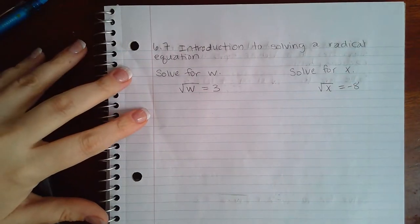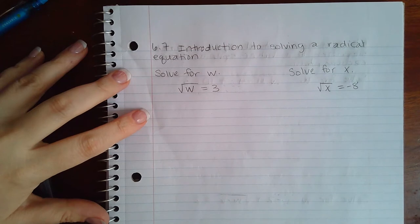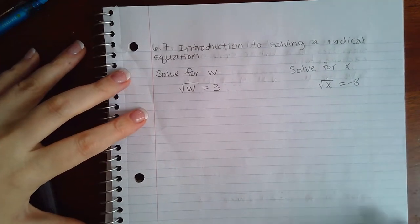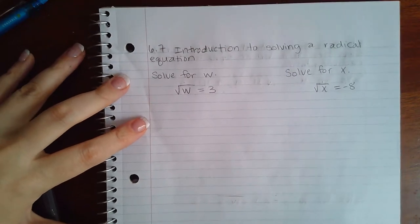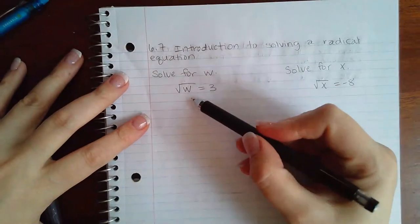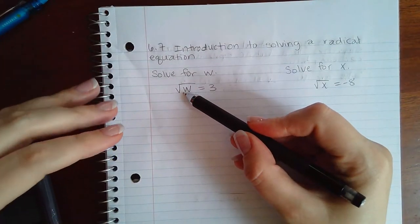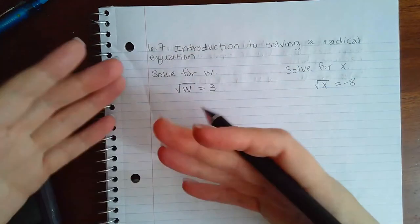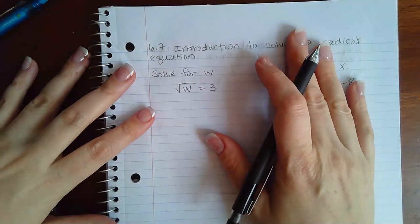Here we have 6.7 introduction to solving a radical equation. We have square root of w equal to 3. We already know that square roots and exponents are inverses of one another, so they undo each other.